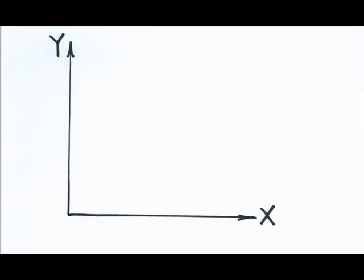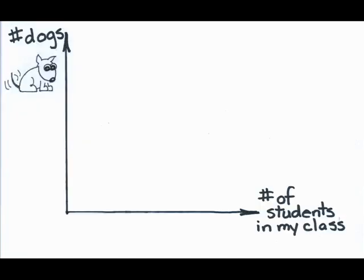There is one final possibility. X and Y could exhibit a constant or independent relationship. Let me give you an example where I have two completely unrelated variables that are going to illustrate this. What if, on the horizontal axis, I have the number of students enrolled in my class? On the vertical axis, the number of dogs in the McGlasson household. I happen to have two.